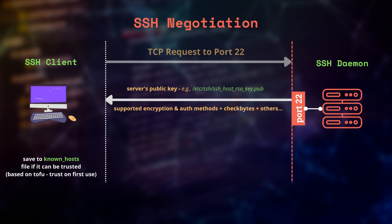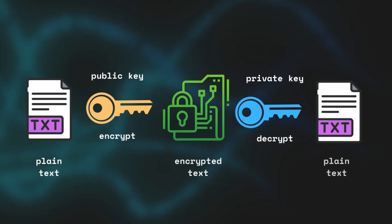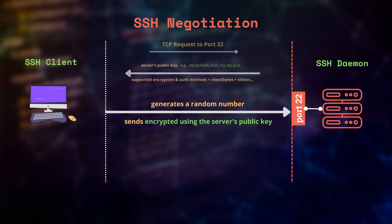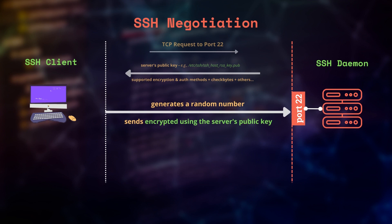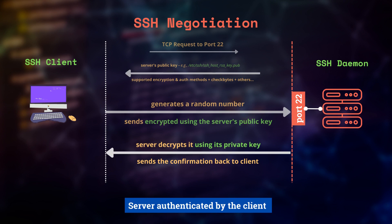Once the server's public key is trusted, the client generates a number, encrypts it using that public key, and sends it back. In asymmetric cryptography, two keys are involved: a public key and a private key — they are a pair. Only the private key can decrypt something encrypted by the public key. The private key must be kept safely by the owner only, while the public key can be distributed to others. The client encrypts a number using the public key sent by the server and sends it back. If the server is able to decrypt the number and returns a confirmation, then it means the server truly possesses the private key.